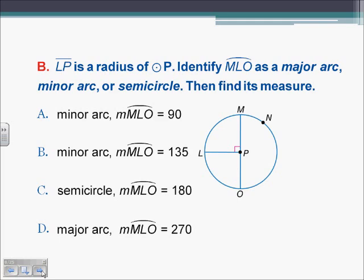LP is a radius of circle P. Identify arc MLO as a major arc, minor arc, or semicircle. Arc MLO goes halfway around the circle — it is split up by MO, which is the diameter. So arc MLO must be a semicircle, and all semicircles equal 180 degrees. That is answer C.